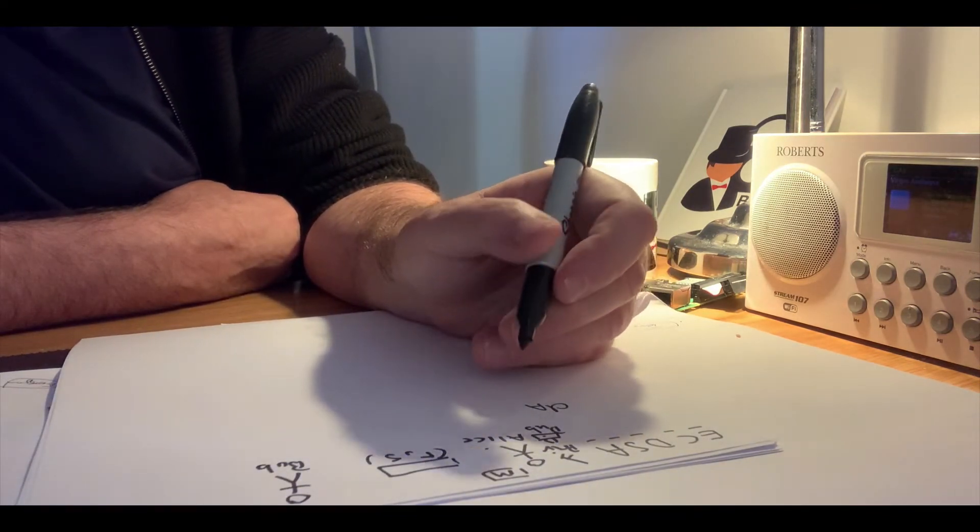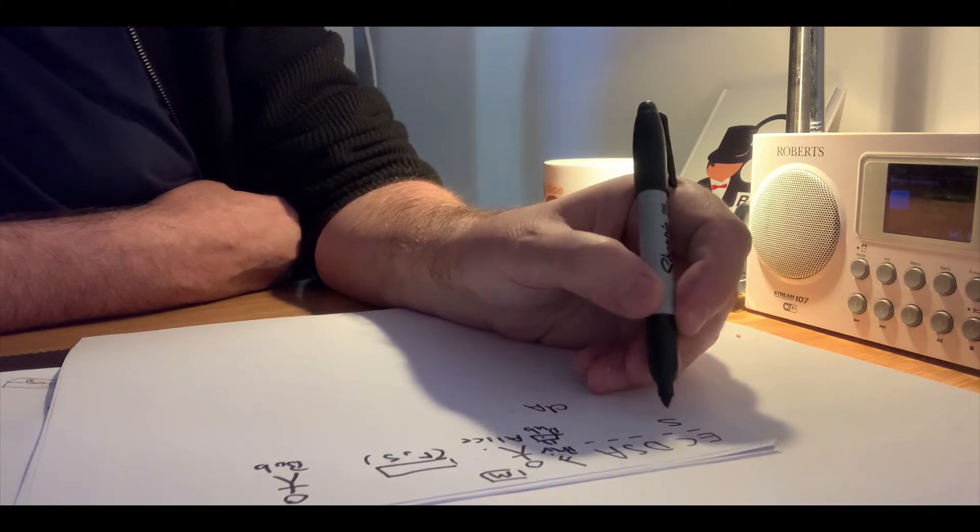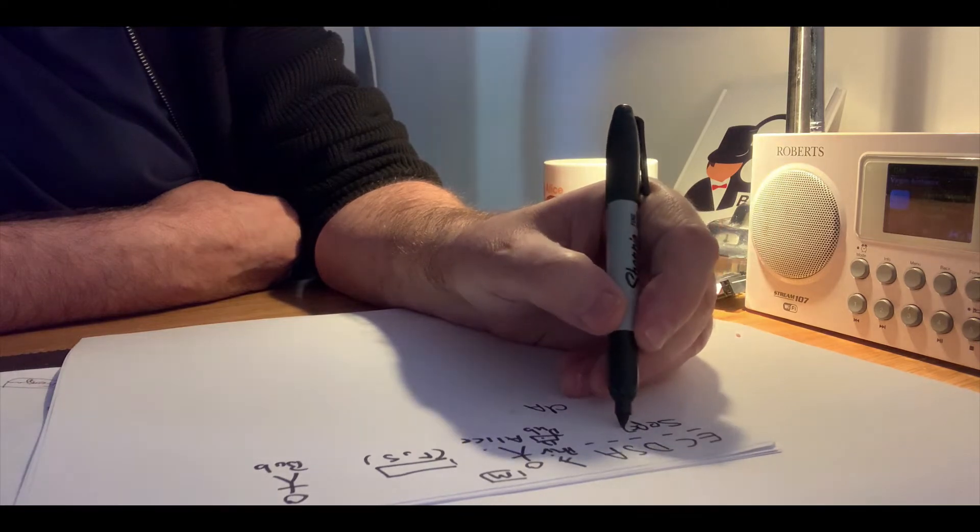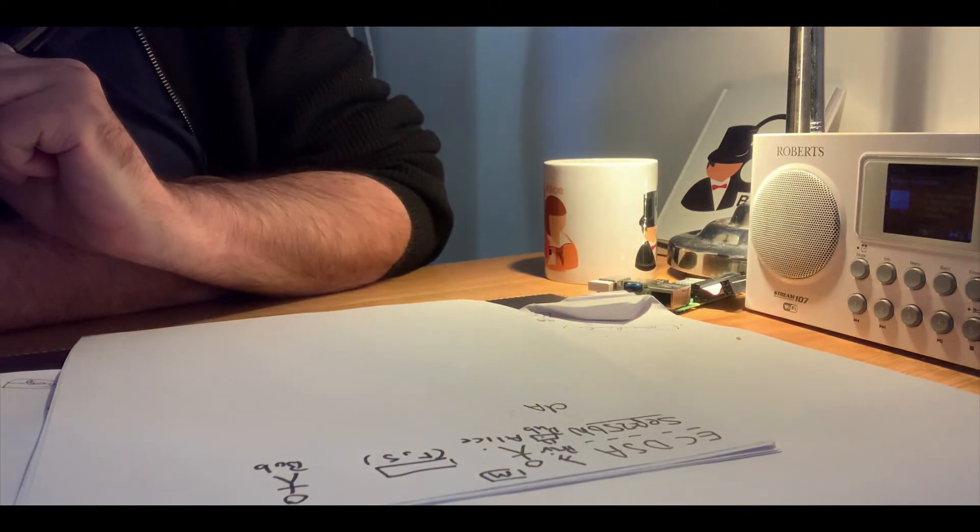Typically that will be a 256-bit private key number, and what we'll do is we'll use the elliptic curve that is used in Bitcoin.